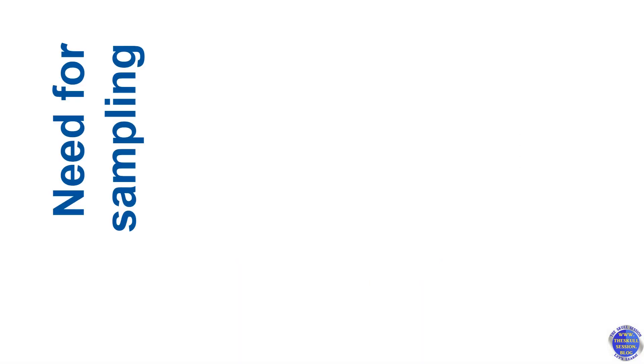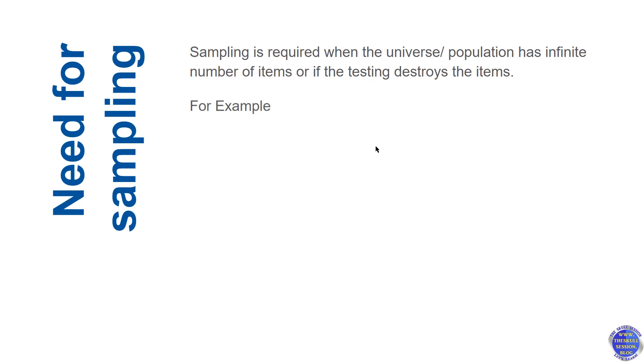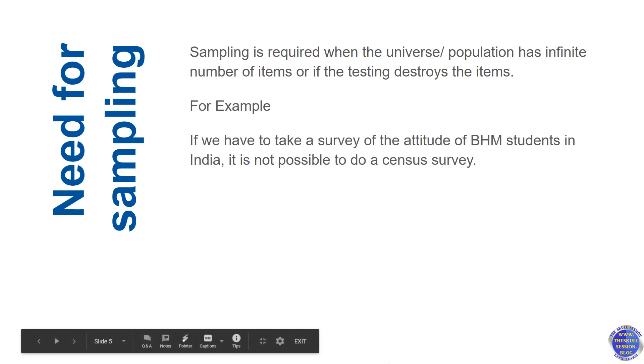Thus, from the above-mentioned concepts, we can understand the need for sampling. Sampling is required when the universe or population has an infinite number of items. Sometimes it can be possible that if you try to do a census survey, the entire unit might be destroyed. In both these instances, sampling is required to conduct the research. So let's look at an example: if you have to take a survey of the attitude of BHM students in India, it is not practical to do a census survey, so here the population is becoming infinite.